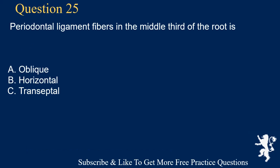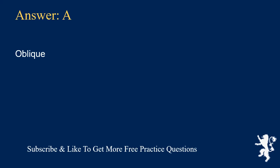Question 25. Periodontal ligament fibers in the middle third of the root are: A. Oblique, B. Horizontal, C. Transeptal. Answer: A. Oblique.